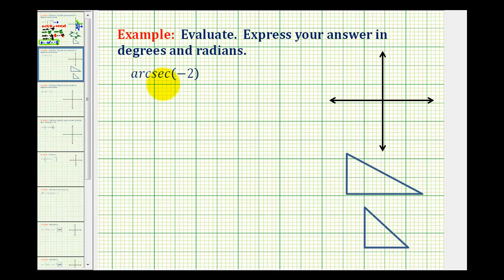We want to evaluate this inverse trig expression in both degrees and radians. We're given arc secant of negative two, which means this is equal to some angle theta that has a secant function value of negative two.